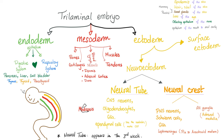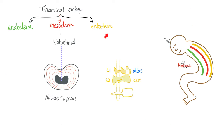The ectoderm gives you surface ectoderm for the epidermis of your skin, and neuroectoderm for the central nervous system via the neural tube, and the peripheral nervous system via the neural crest. Check out my video on Neurulation in my biology playlist. So the ectoderm gave us the brain, spinal cord, cranial nerves, and spinal nerves.